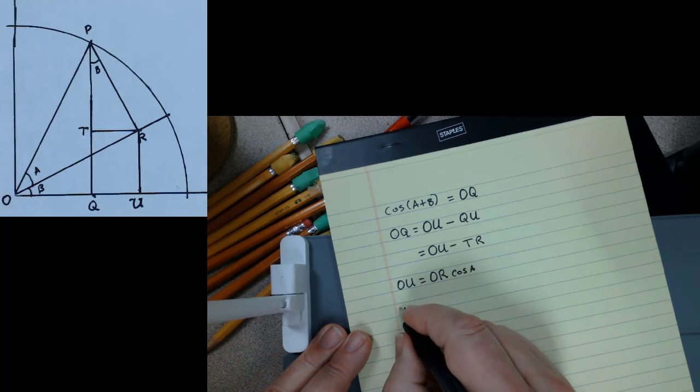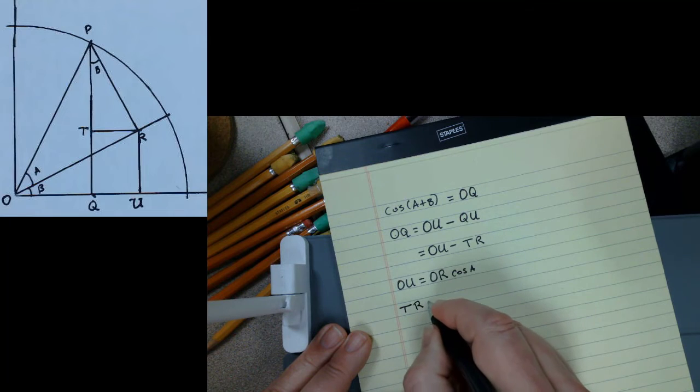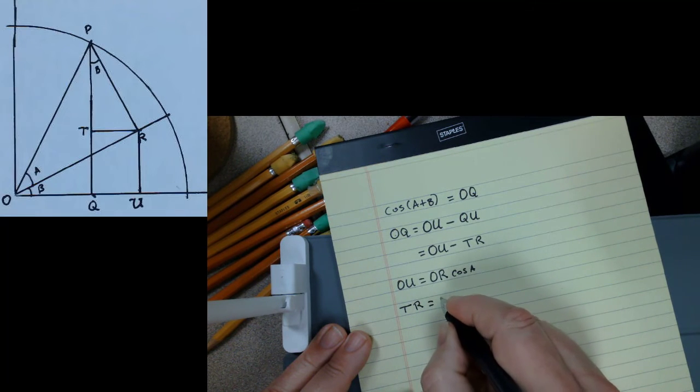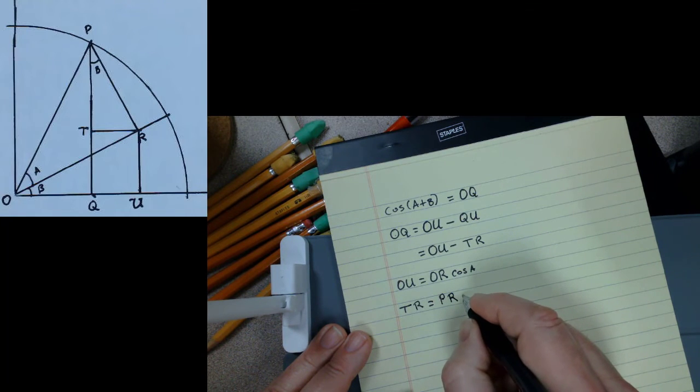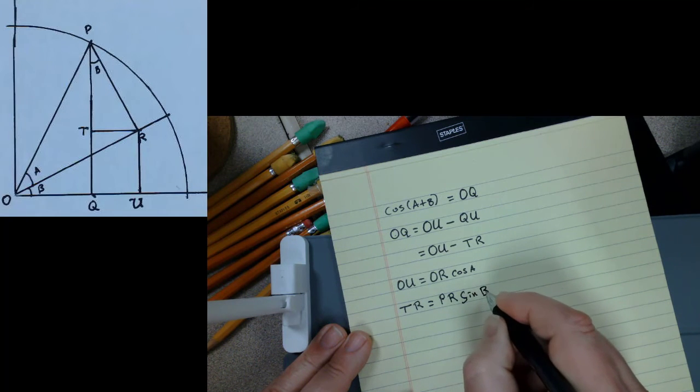And that TR is equal to PR times sine of the angle B.